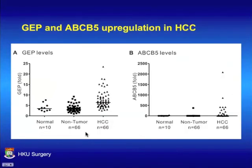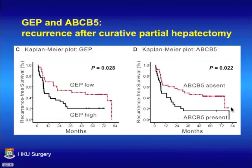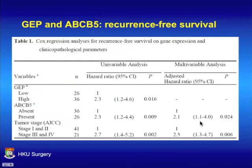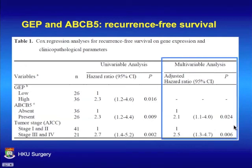We then examined the clinical implication of GEP and ABCB5 in an independent specimen cohort. Both molecules are upregulated in HCC compared to adjacent non-tumor and normal liver tissue. Patients were segregated according to gene expression levels, and those with high GEP or ABCB5 expression showed poor recurrence-free survival. By multivariate Cox regression analysis, ABCB5 and tumor stage were independent prognostic factors.